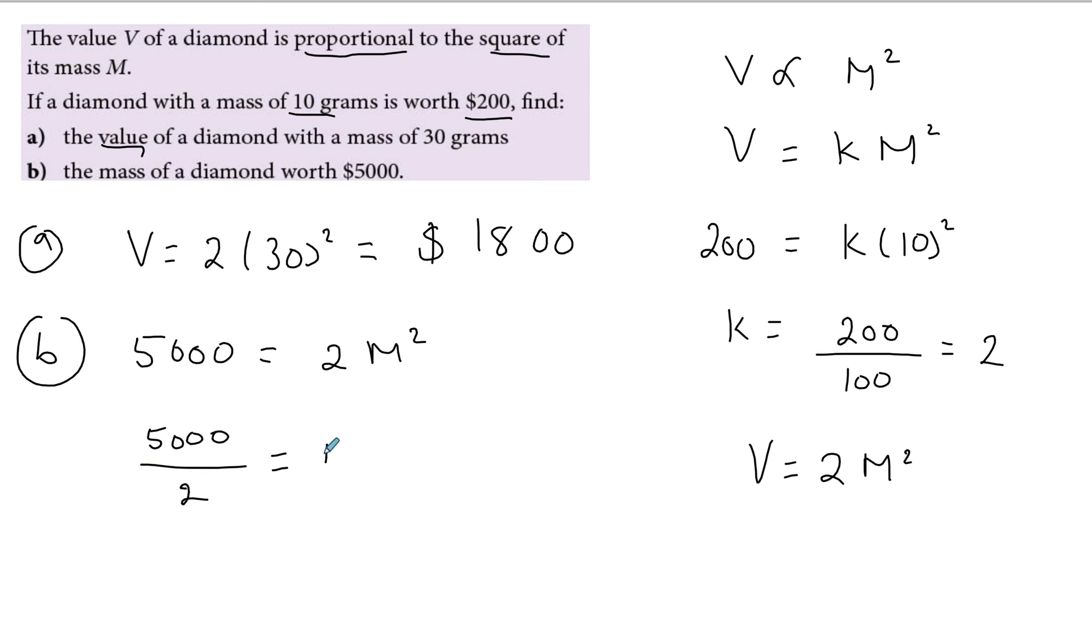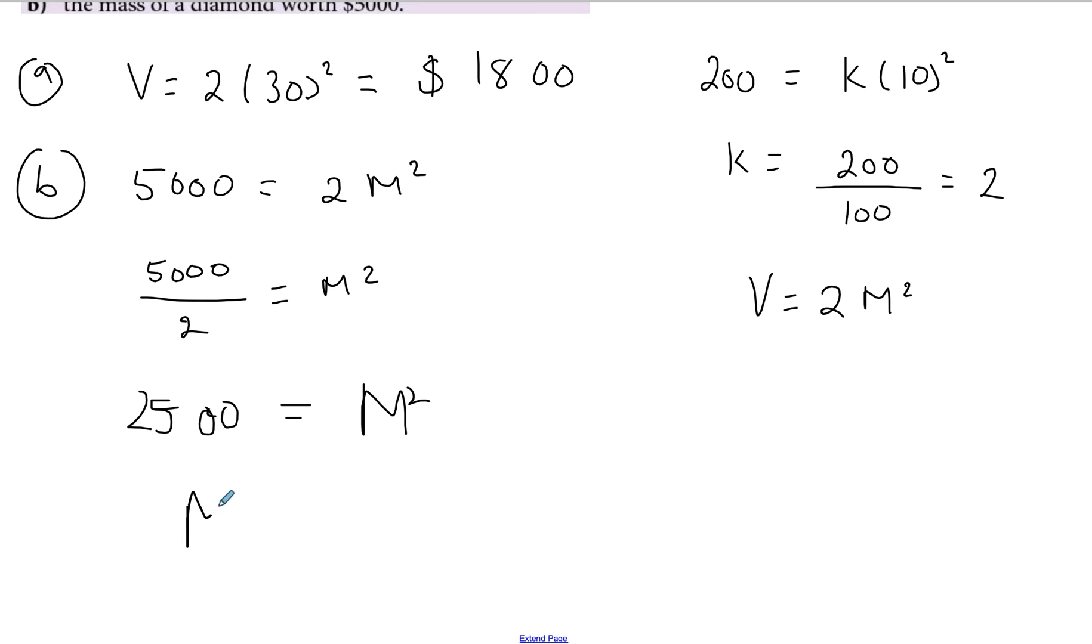For part B, you need the mass but you have the value. So if the value is 5000 and the mass is unknown, you solve it. You first divide by 2 on both sides, and this will be 2500. And then you take the square root on both sides, and that will give you the value of M, which in this case is 50. So M is equal to the square root of 2500, which is just 50. And make sure you have the units there - so 50 grams. So hopefully the explanation is clear about how to solve direct proportion.